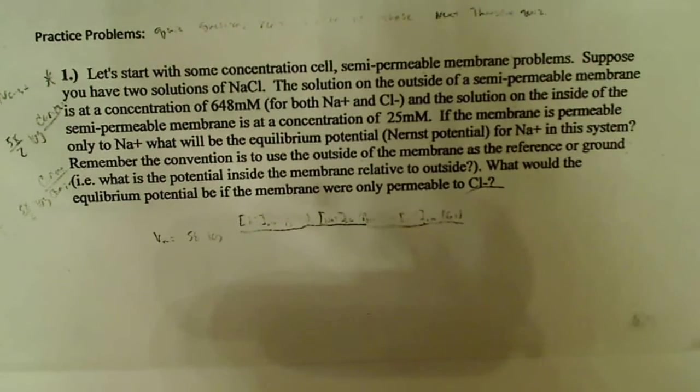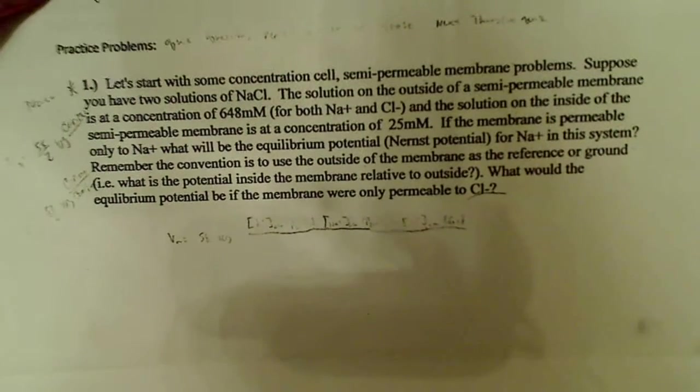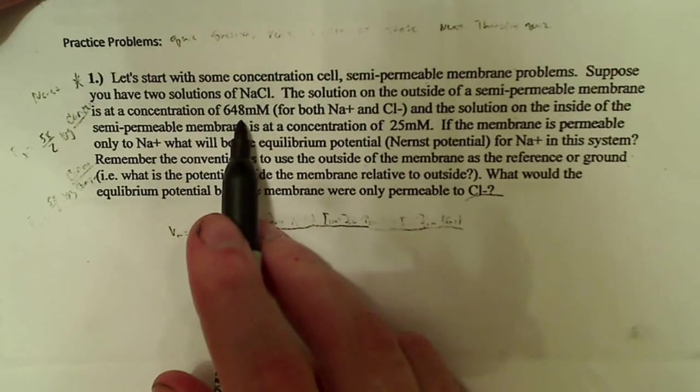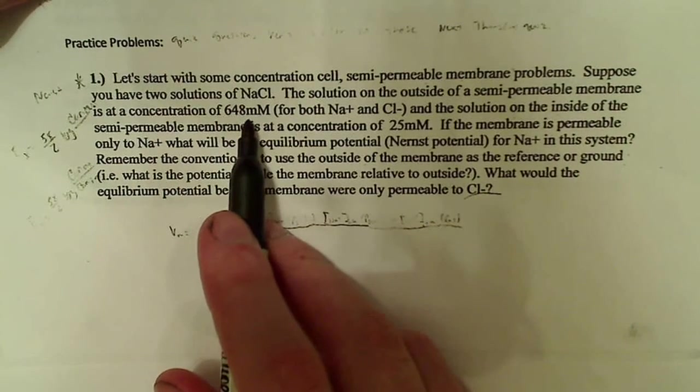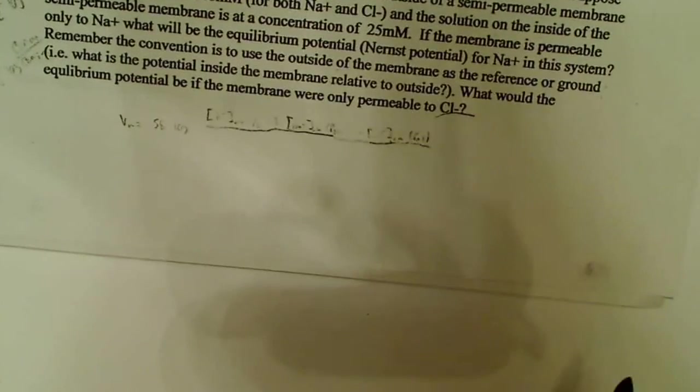So, okay. The first thing I would do is figure out what my concentrations are inside and outside. So, I would go back into the problem, and I would say, okay, it says that the concentration of 648 millimoles is outside. So, I would just simply write that down on my paper.